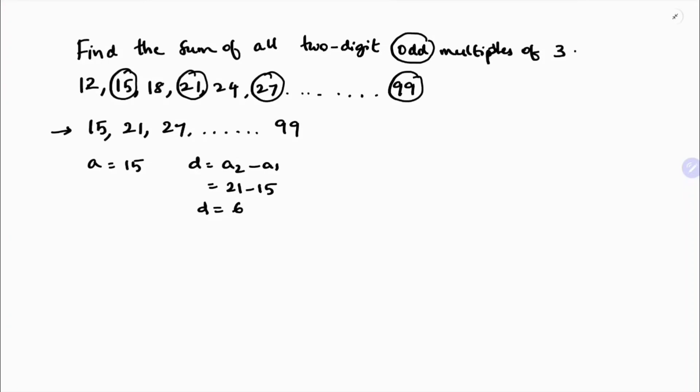We need to find all the terms, but we don't know how many terms there are. So I'll use the nth term formula. I know the nth term is 99, so with the help of this formula - aₙ = a + (n-1)d equals 99 - I'll find the value of n.